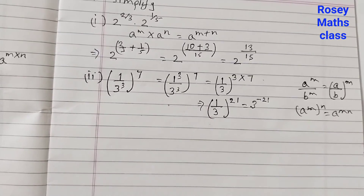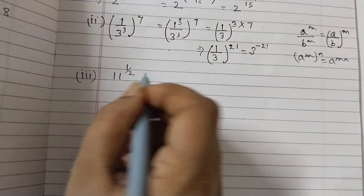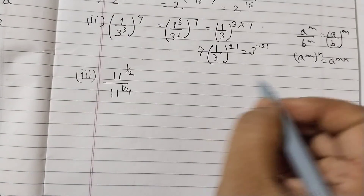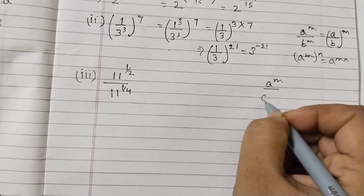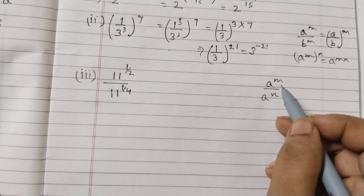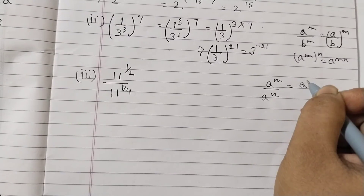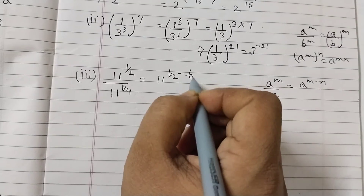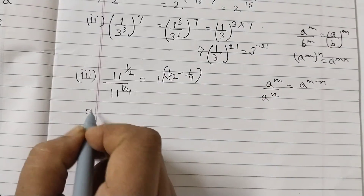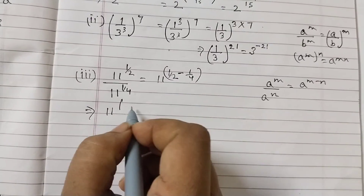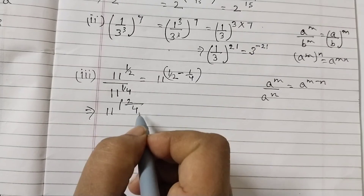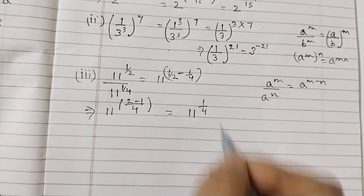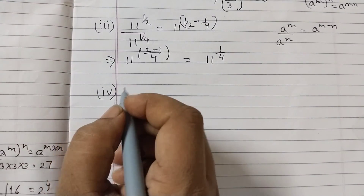Third part: 11^(1/2) divided by 11^(1/4). The law of exponents for same base with different exponents: a^m ÷ a^n = a^(m−n), so we subtract the exponents. That gives 11^(1/2 − 1/4). The LCM of 2 and 4 is 4: 1/2 = 2/4, so 2/4 − 1/4 = 1/4. The answer is 11^(1/4).